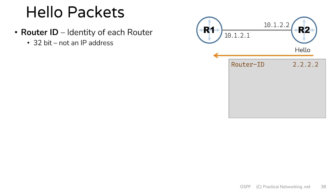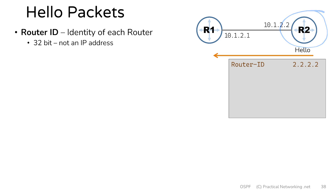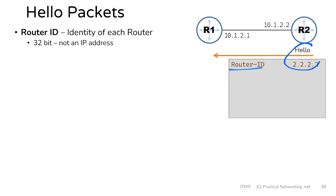You might be asking yourself: if we have an IP address on this link, why do we need a router ID? Well, router 2 might end up with a bunch of different interfaces, which means a bunch of different IP addresses. It's nice to have a single value that can be used to refer to router 2 and all of its connected interfaces. That's why OSPF uses a router ID to identify a router instead of simply an interface IP address, and each router will identify its own router ID inside these hello packets.